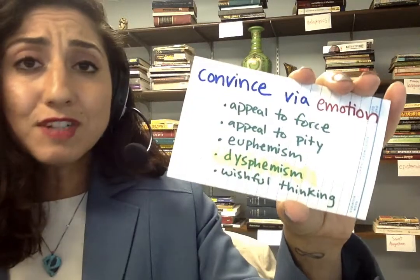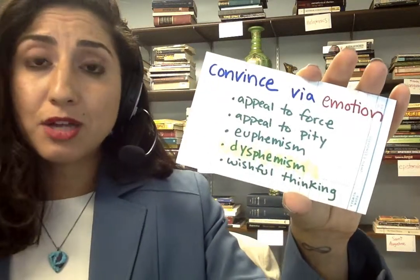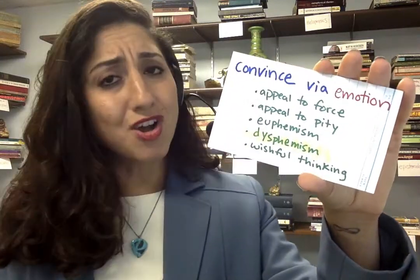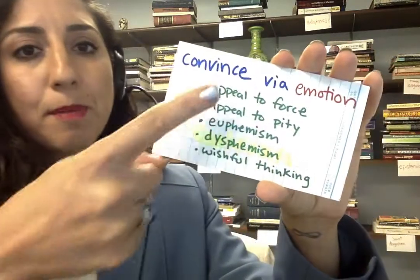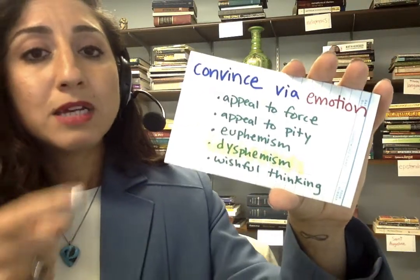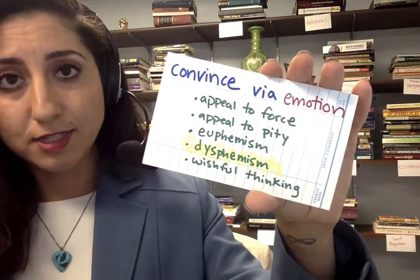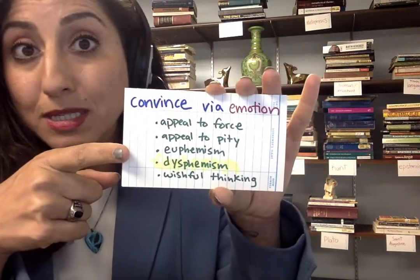There are a ton of different ways to appeal to emotion to make a point — it looks like you're giving an argument, but you're not giving a good one. Appeal to pity, euphemism, dysphemism, wishful thinking — all of these are logical fallacies. If you're trying to argue that a conclusion is true using premises, but you use premises that employ words making everything sound super nice and fluffy when they're really not, then you've used a euphemism.